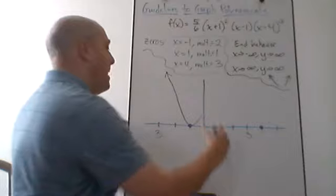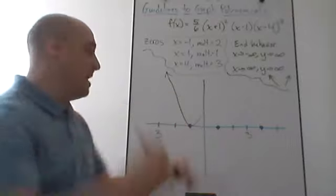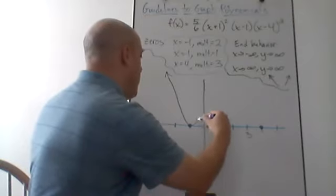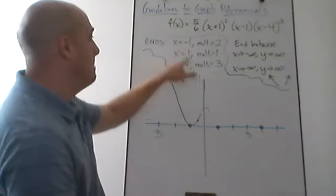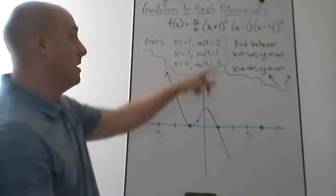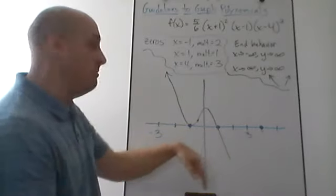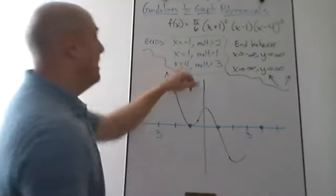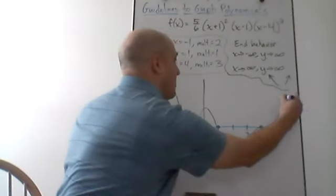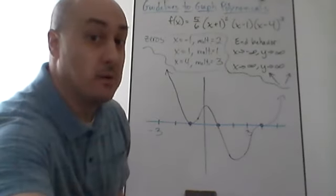A multiplicity of 2 means the graph bounces off that x-intercept, like a parabola. It bounces at x = −1, goes up, then comes back down. At x = 1, multiplicity 1 means it goes straight through like a linear function. Then at x = 4, multiplicity 3 behaves like a cubic, curving as it passes through. That gives us our complete graph, though finding exact high and low points requires calculus.